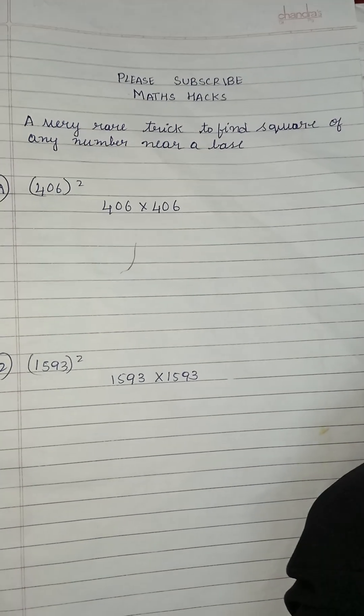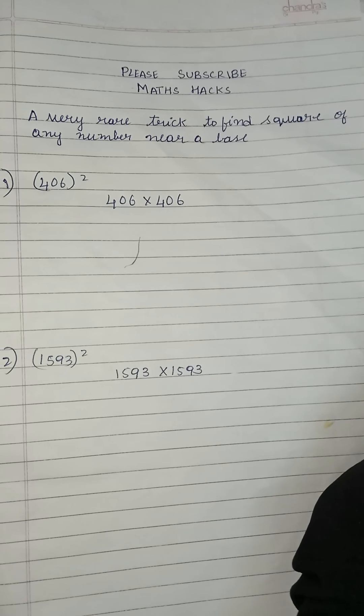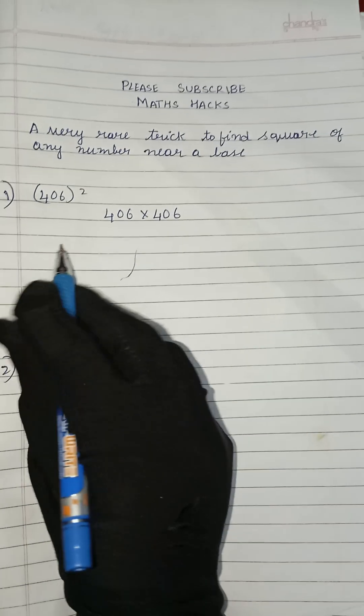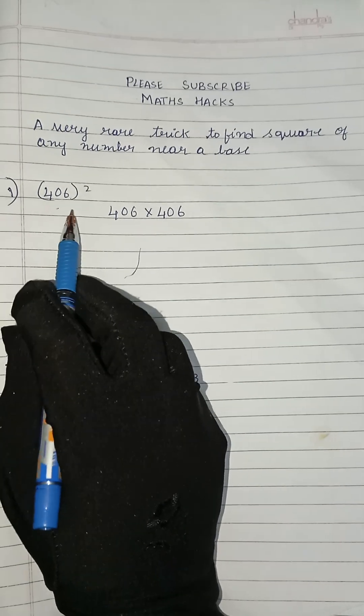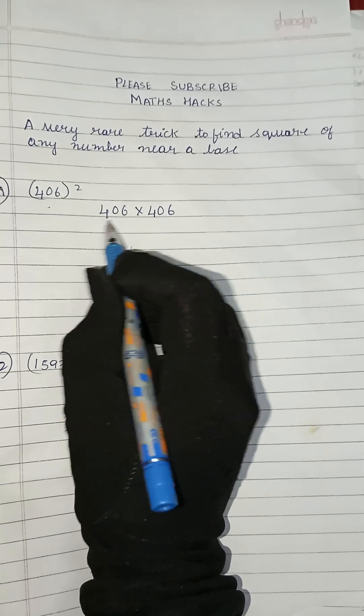Hi viewers, I hope you all are fine. Today we will learn an amazing trick to find square of any number near a base. The question here is 406 whole square. The first step is we will round off 406.